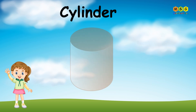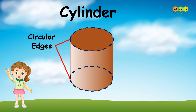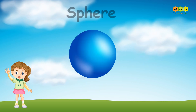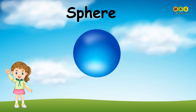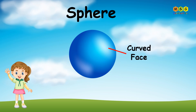Cylinder: a cylinder has circular edges and a curved face. Sphere: a sphere has only a curved face.